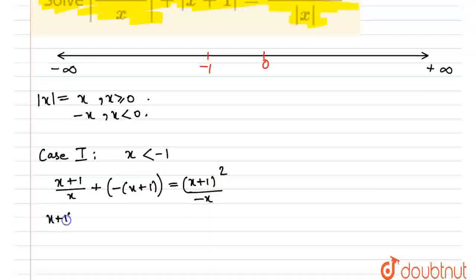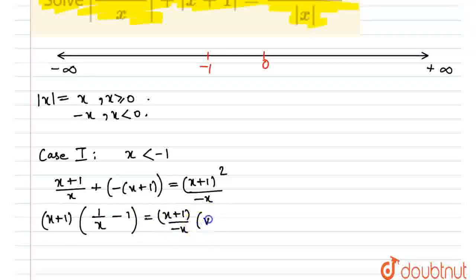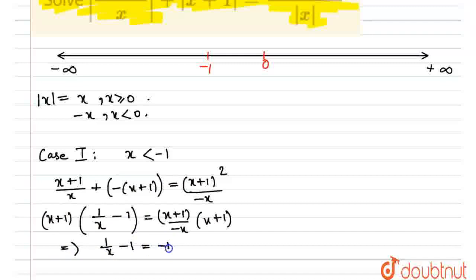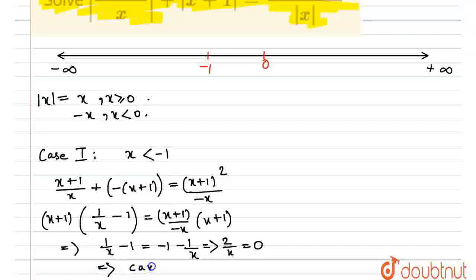Now, x+1 can be taken out as a common factor. After cancelling x+1 from both sides (which is valid since x+1 ≠ 0 when x < -1), this becomes 1/x - 1 = -1 - 1/x, which gives 2/x = 0. But 2/x is never 0 for any x. Therefore, for x < -1 there are no possible solutions.